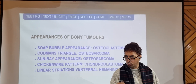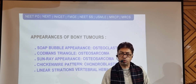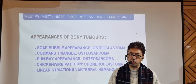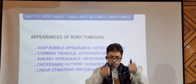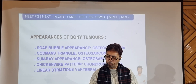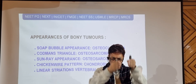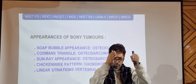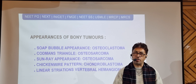A question asked many times: linear striations are seen in which bone tumor? You have to remember hemangiomas. In vertebral hemangioma, due to an alteration in bone growth, there is a bar-like pattern on radiographs — like the linear iron bars you would see in old-style prison cells. This bar-like appearance is called linear striations and is very characteristic of vertebral hemangiomas. These appearances are very important for your examinations.